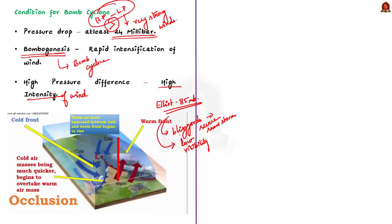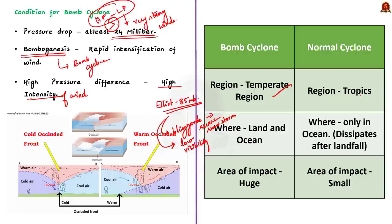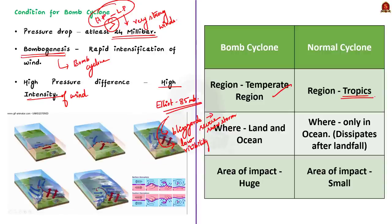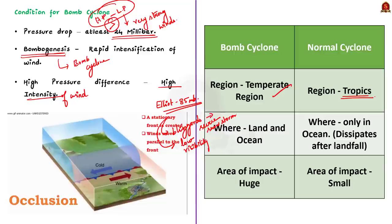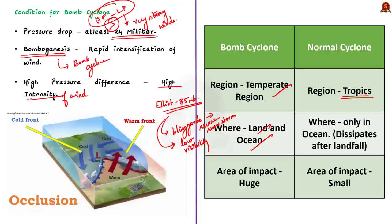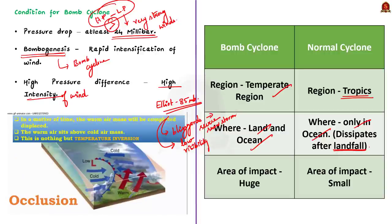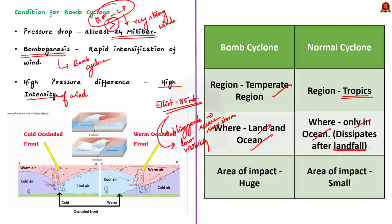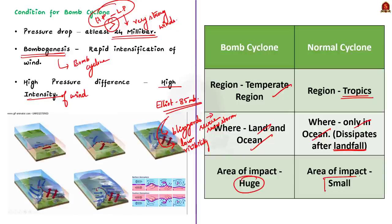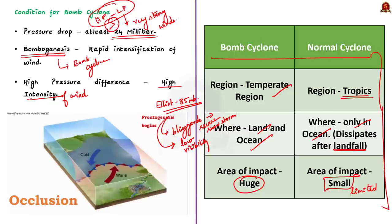Now, how are bomb cyclones different from normal cyclones? Bomb cyclones are temperate cyclones that occur in the temperate region, while normal cyclones are tropical cyclones that occur in the tropical region — this is the first difference. Secondly, bomb cyclones occur over both land and oceans, but tropical cyclones occur only over the oceans; when a tropical cyclone reaches land, it starts dissipating, a process called landfall. Thirdly, bomb cyclones impact a very huge area, but the impact of tropical cyclones is very limited.